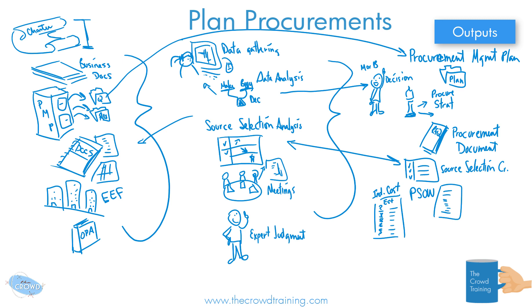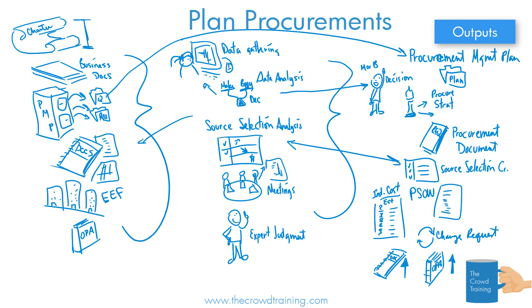Sometimes we're going to find out that what we've decided on or are planning on is not going to be useful, and so we need to change it — we might have some change requests. With all this work going on, we're going to be updating all of our documentation — our risks, because if we're using a certain vendor there's both opportunity and threat. We might also find that the templates we've been using need updating. Those are our document updates and organizational process asset updates.